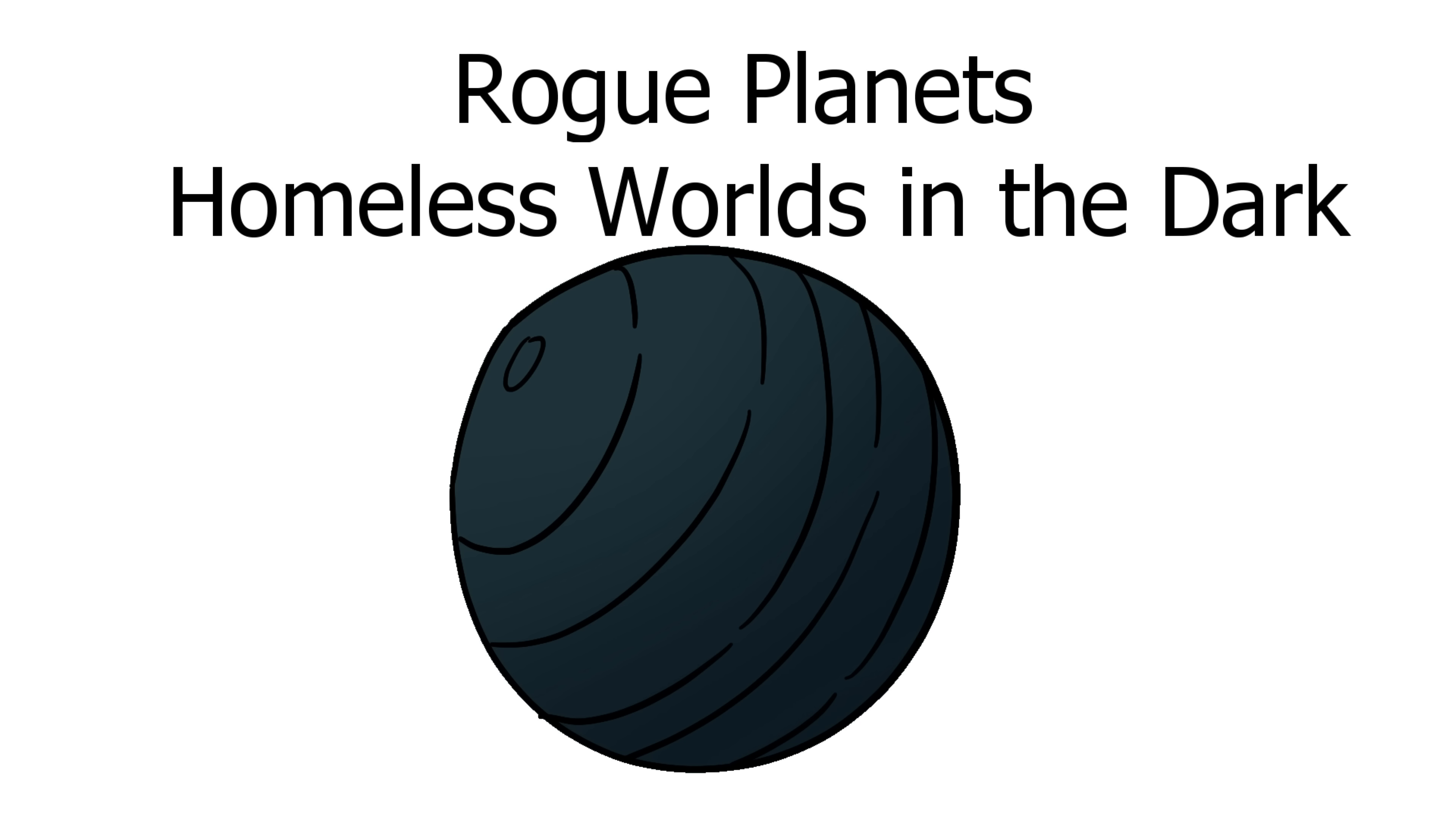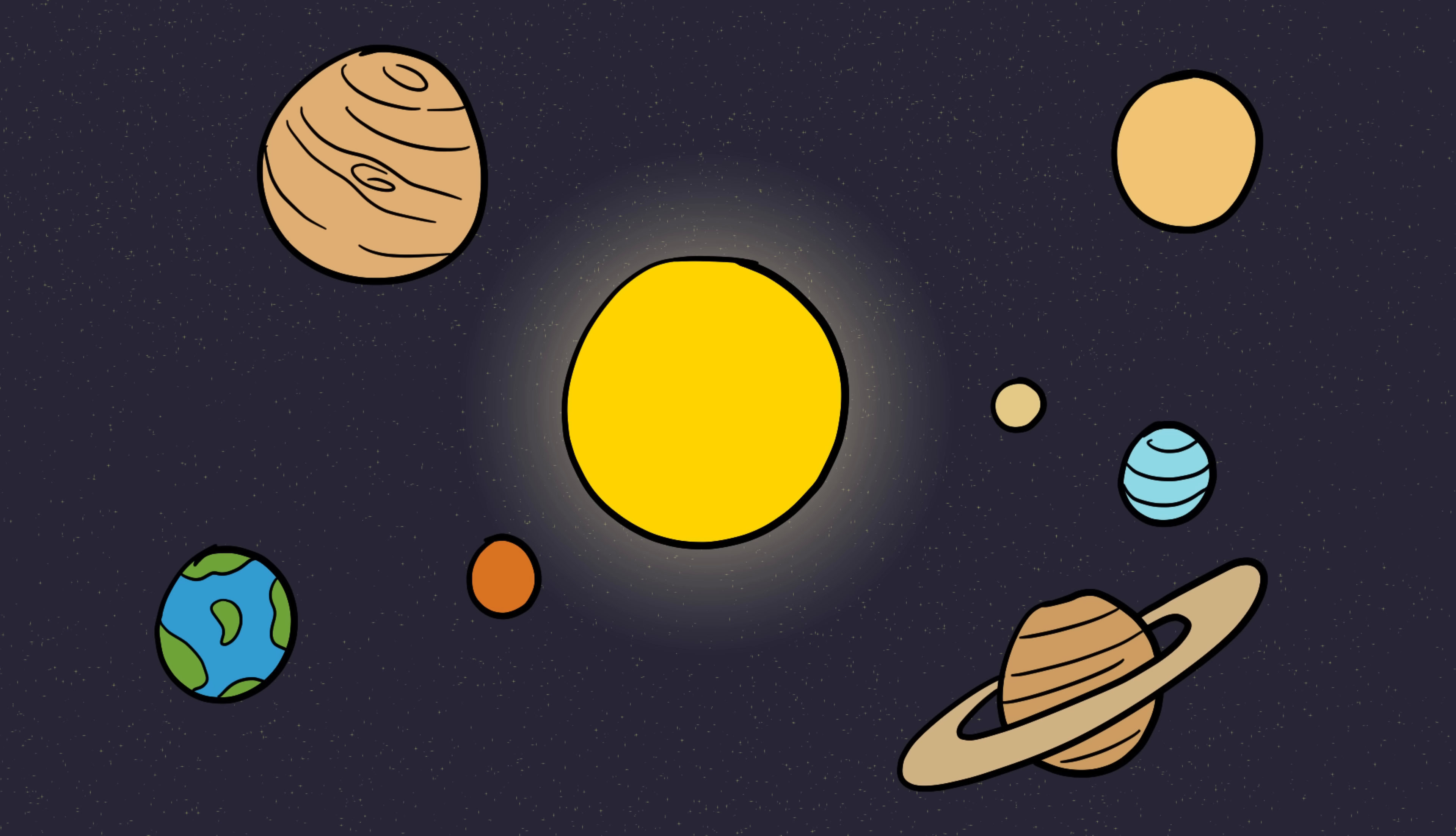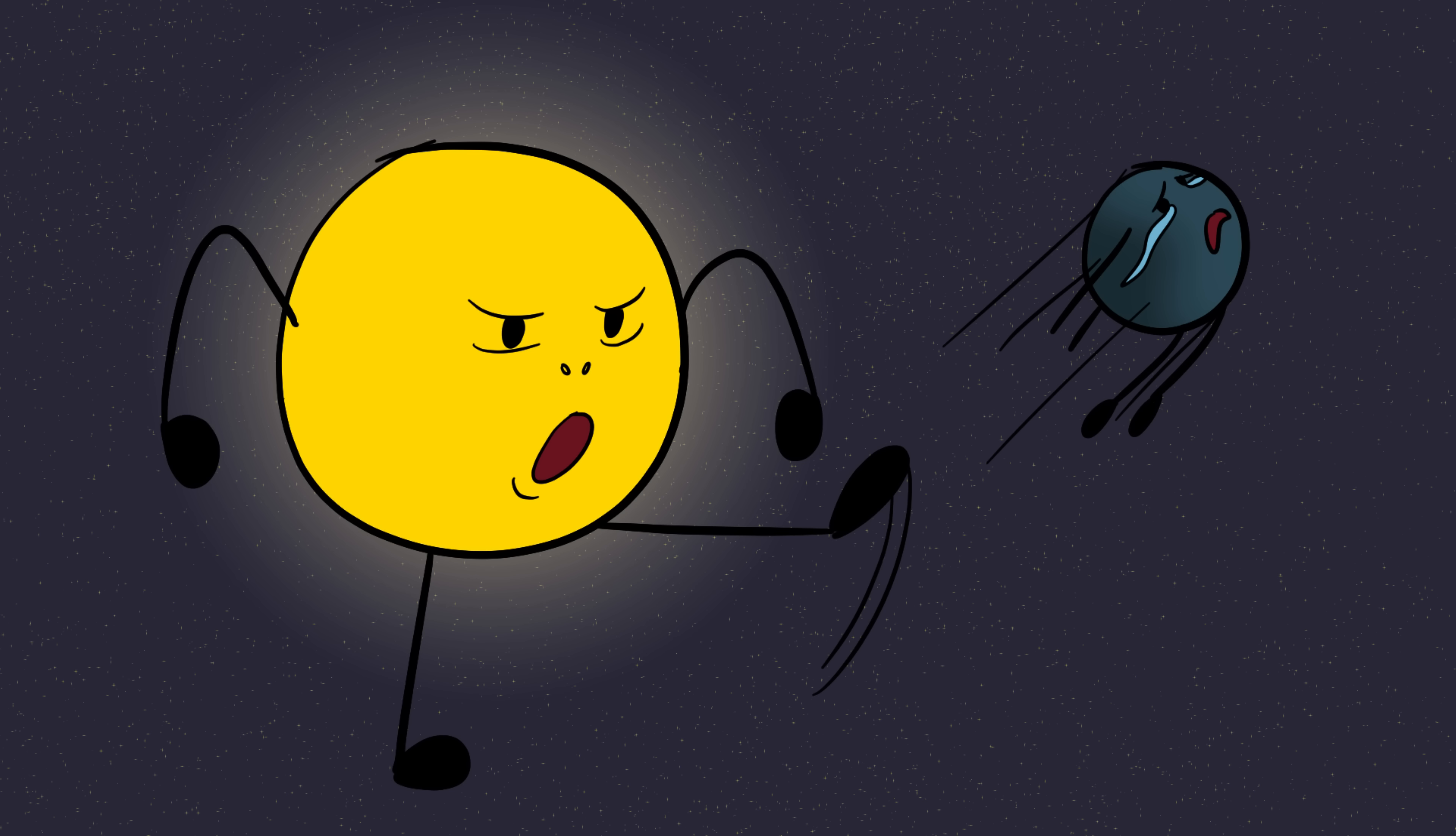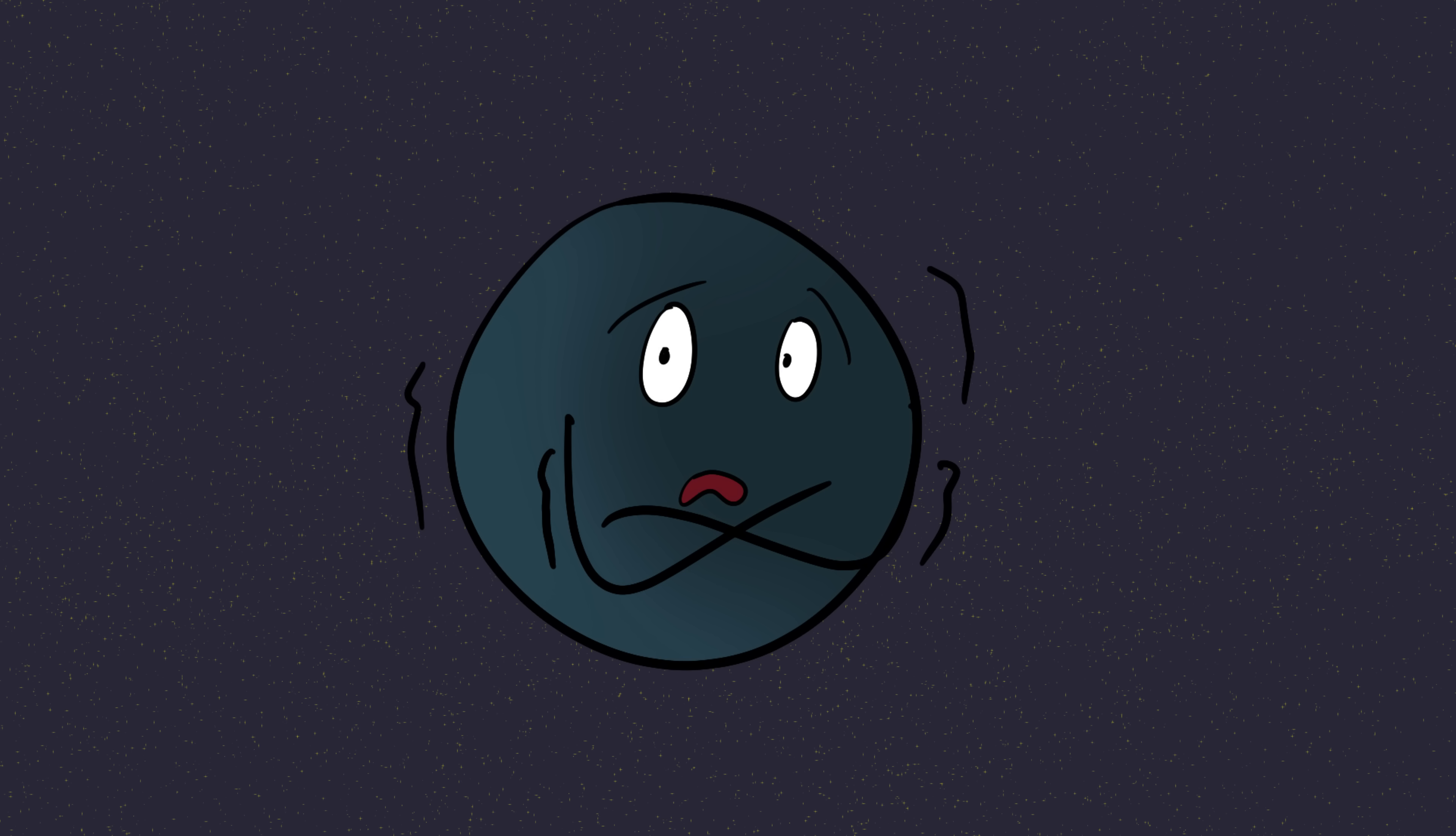Number nine, rogue planets, homeless worlds in the dark. Planets are supposed to behave. They're supposed to orbit a nice, warm star, spin politely, and let life evolve in peace. But rogue planets? They don't care about rules. These are worlds that got kicked out of their solar systems, flung into the cosmic void. Now they drift alone through eternal darkness, starless and frozen like interstellar ghosts.